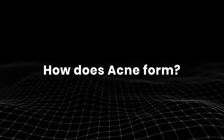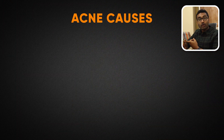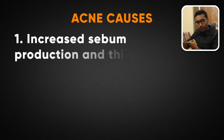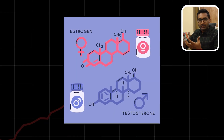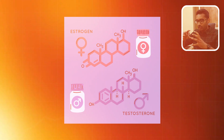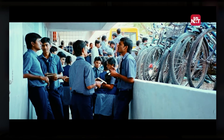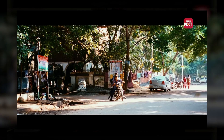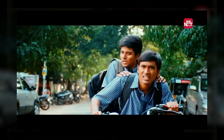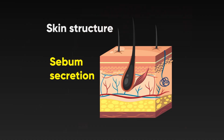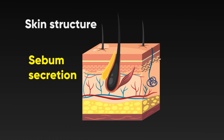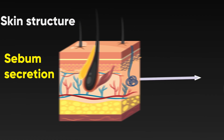So why do we have acne? Number one: increased sebum production and thickness. In puberty, androgens are very important. In this adolescent stage — the human growth stage — there is maximum growth. Because of these hormones, skin secretions become thick and create an oily environment.